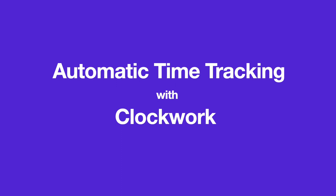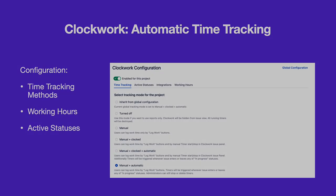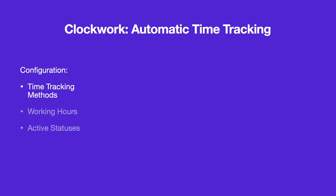Clockwork allows you to put time tracking on autopilot and capture work logs without any effort from the user. Automatic timers use the assignee's configured working hours and the issue status to calculate the time worked and create the work logs. To use automatic time tracking, you need to configure the time tracking method, working hours, and active statuses.